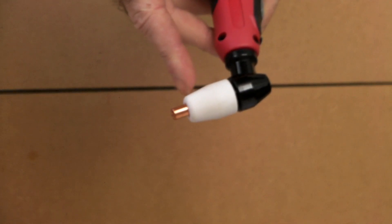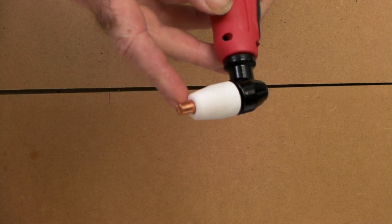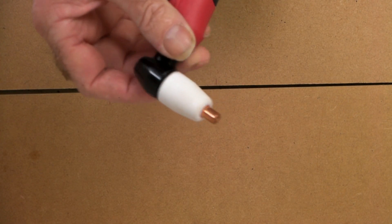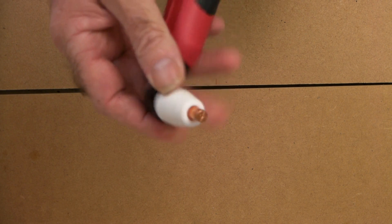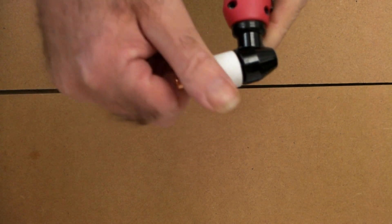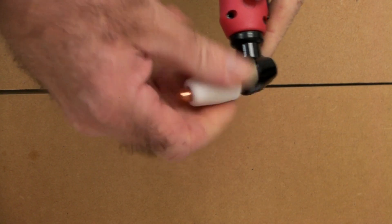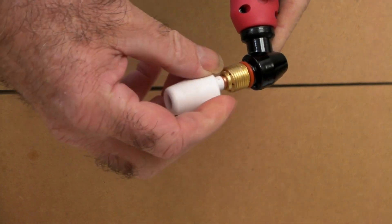This here is a drag tip on a PT-31 Plasma Cutting Torch or an LG 40. The drag tip is just the name they give to the tip that you drag along your work.